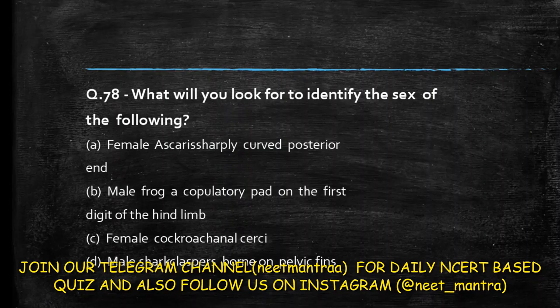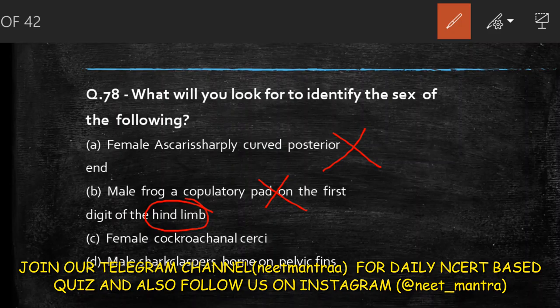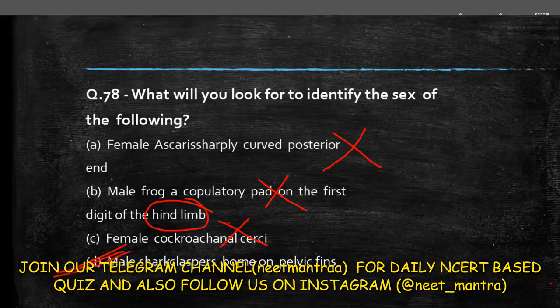Next question: what will you look at to identify the sex of the following? Three options are wrong and one is correct. Female Ascaris has a sharply curved posterior end — this is incorrect because it is the male Ascaris that has a sharply curved end. Male frog has a copulatory pad on the first digit of hind limbs — this is incorrect. Female cockroach anal cerci — cerci are present in both male and female cockroach, so sex cannot be determined this way. The correct answer is option D: male shark has claspers on pelvic fins — claspers are found in male sharks on the pelvic fins.